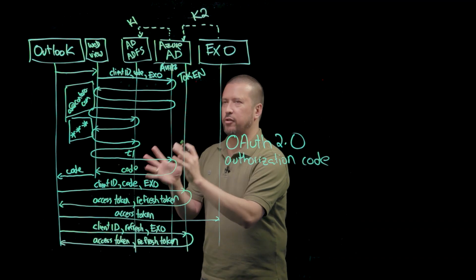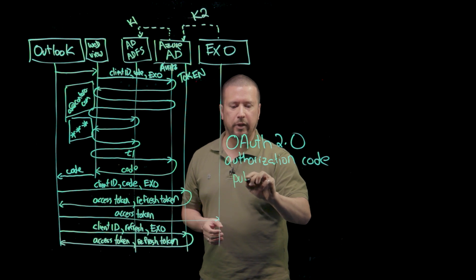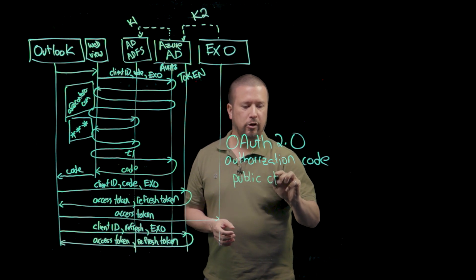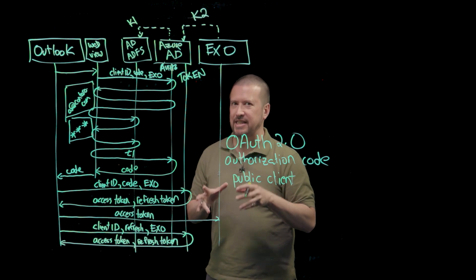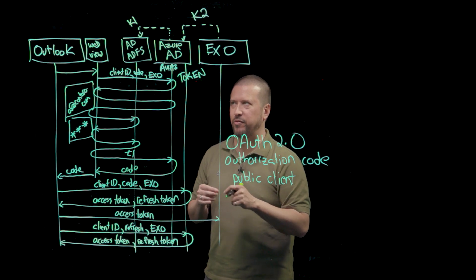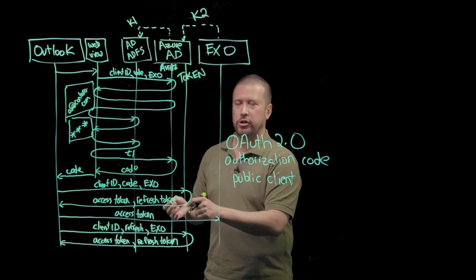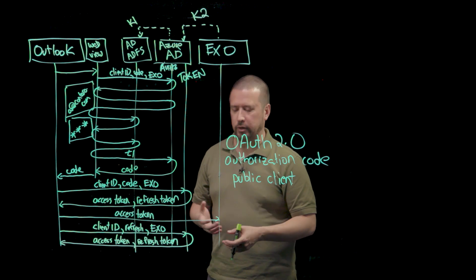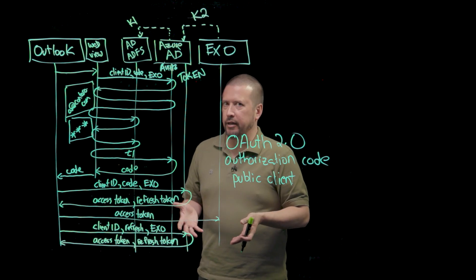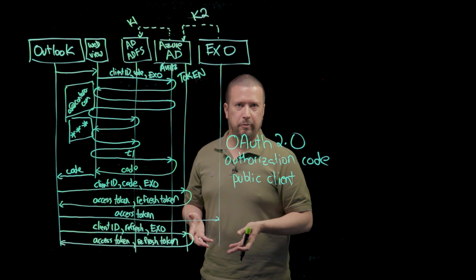The kind of client that Outlook is, is actually called a public client. It's called a public client because Outlook doesn't have a secret that it's using to prove that it is Outlook to Azure Active Directory. It can't do that because the Outlook binary goes everywhere onto your phone and onto your PC, and you could decompile it and extract any secrets that might be in there. So there can't be any secrets in there.